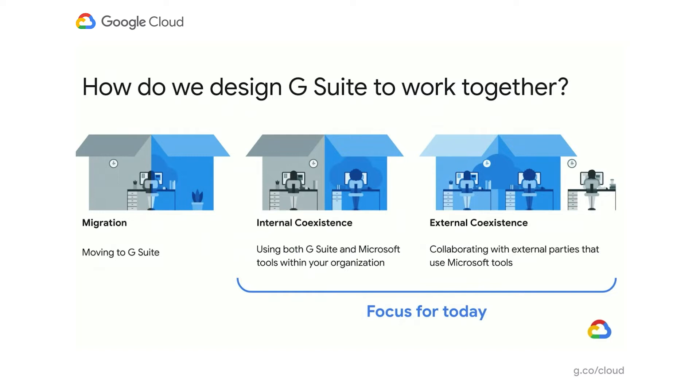The second pillar is internal coexistence. Depending on your rollout strategy and deployment goals, there will often be times where both Microsoft and Google tools are used simultaneously, whether within your team or throughout your organization. We want to make sure our apps and services work great and coexist with Microsoft in all those use cases. A great example of this is when teams sign up for G Suite Essentials. G Suite Essentials provides Google Meet, Drive, Docs, Sheets, Slides, and many other tools for teams that want modern collaboration within an organization that may have existing email and calendar solutions already in place.